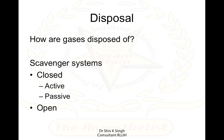Disposal refers to how the gases get disposed of. These are via the scavenging system, which can be a closed system — either active or passive — or an open system. Scavenging systems may not be present in all situations, and where they are not present, closed circuits are very useful, allowing very low flows and reducing contamination of the environment.